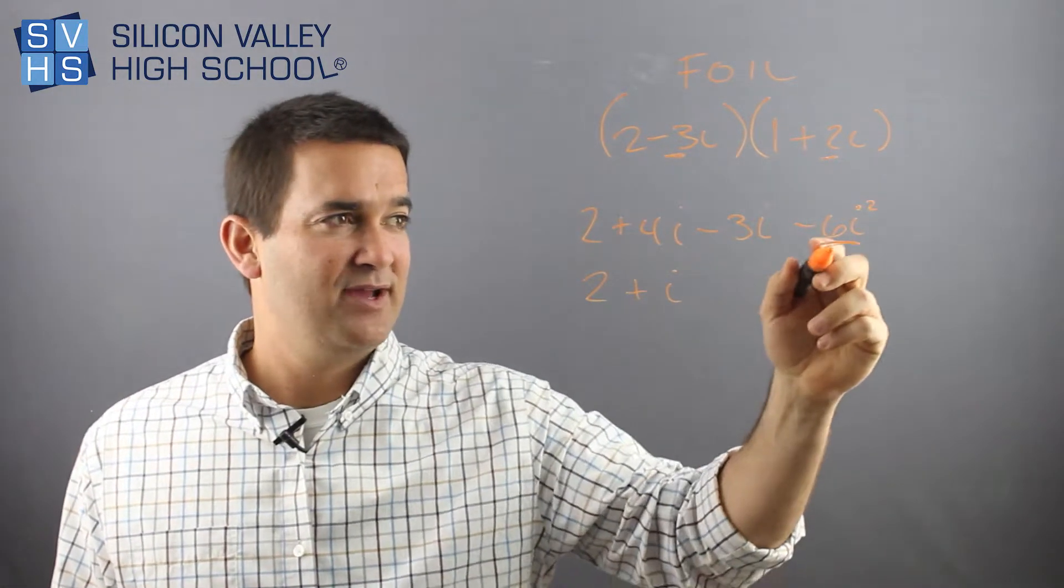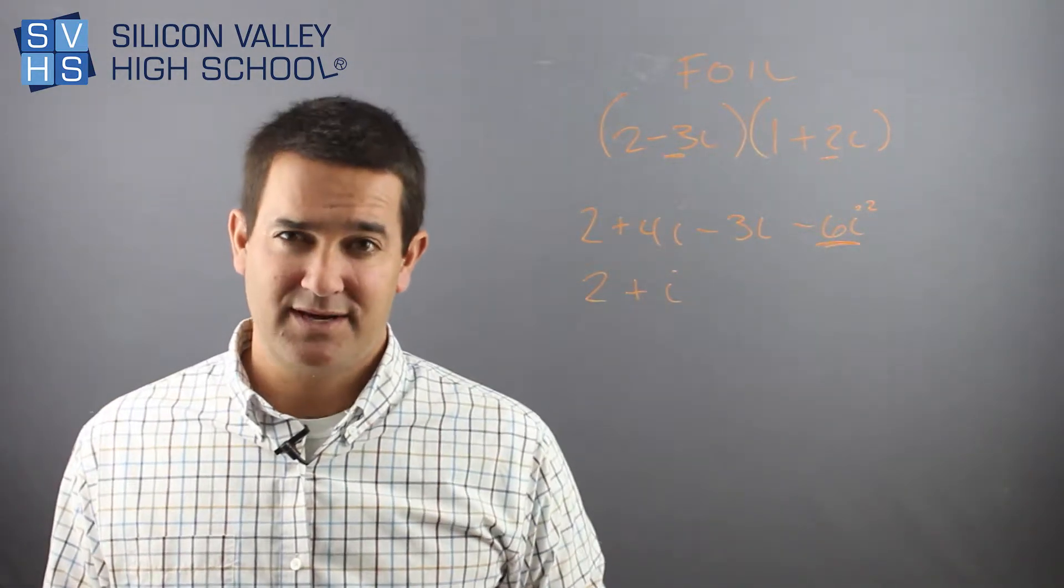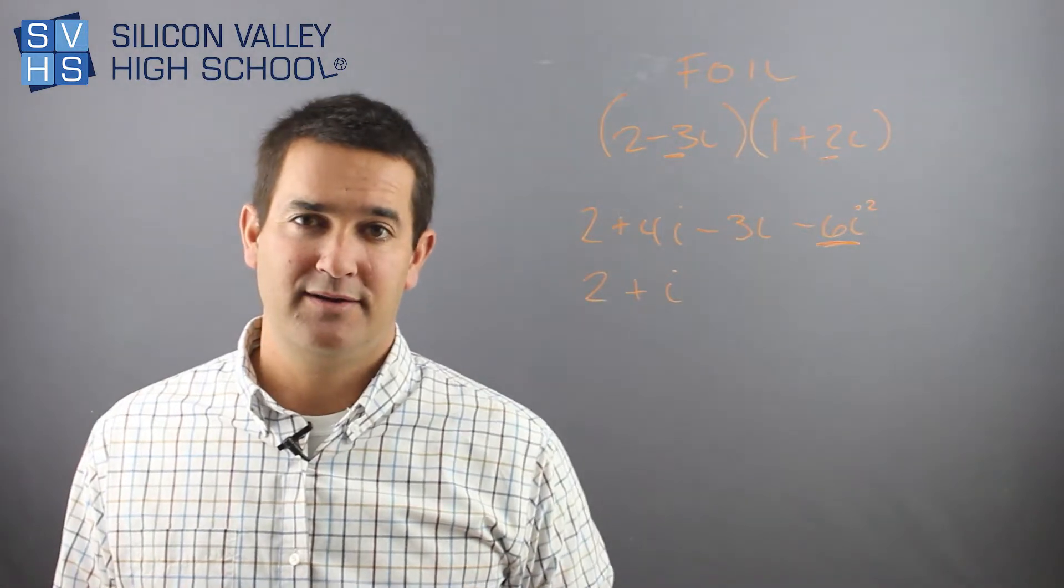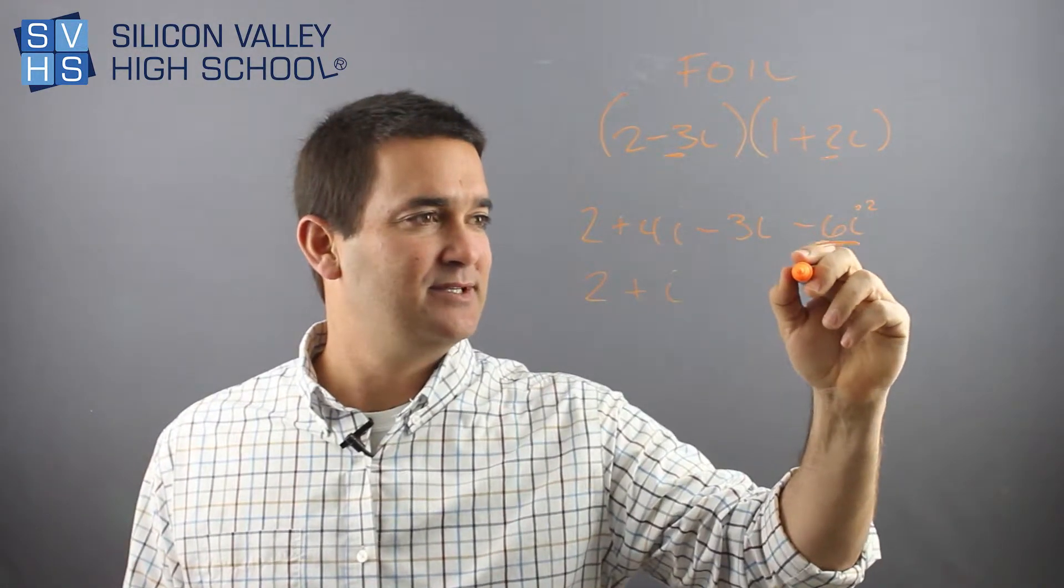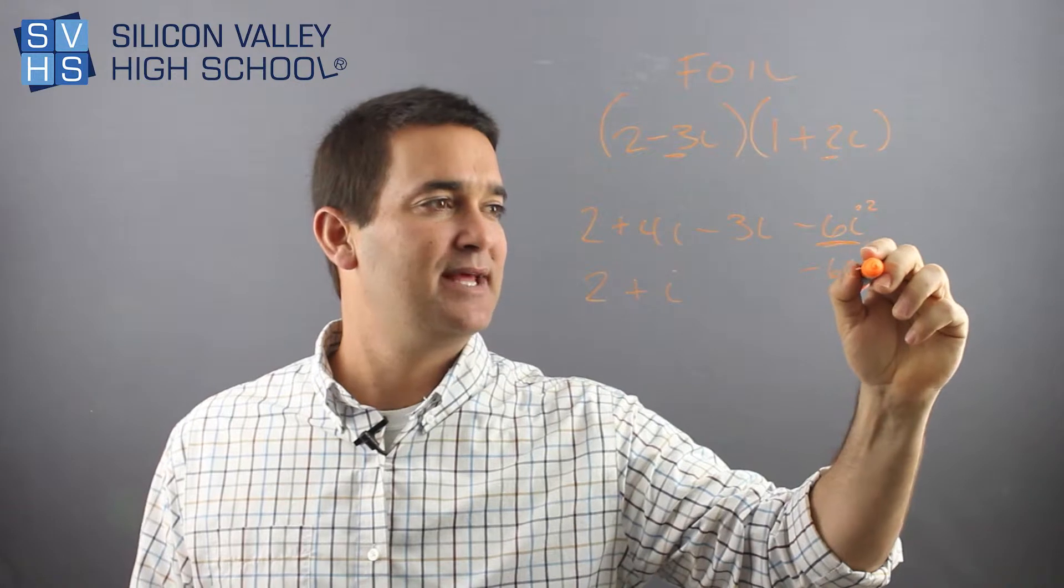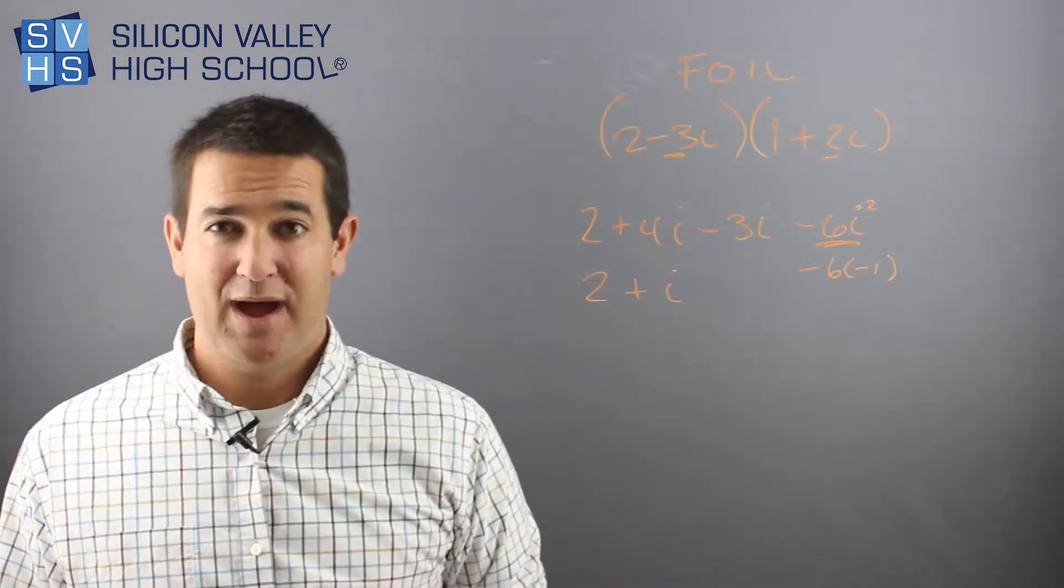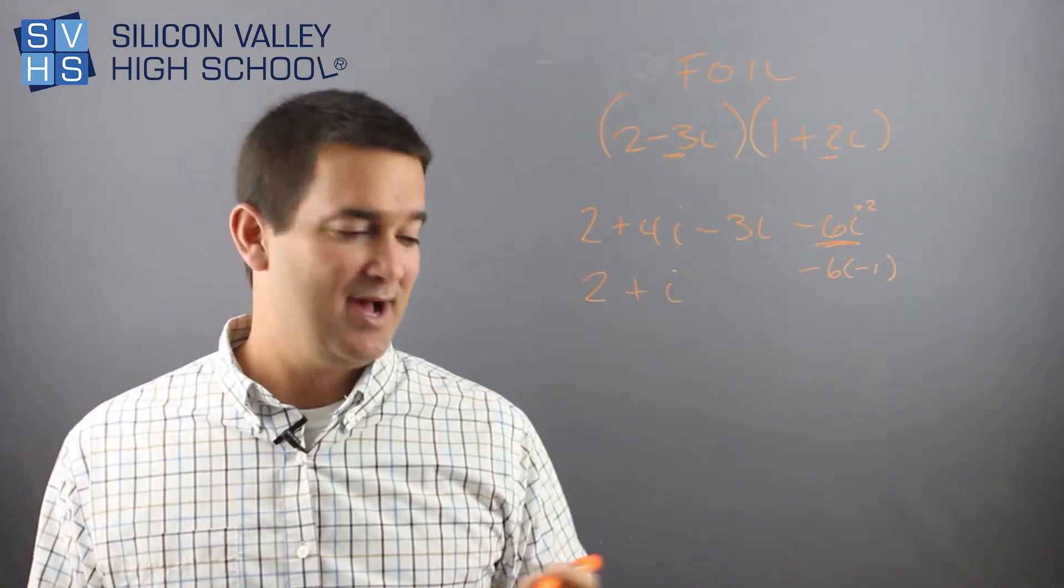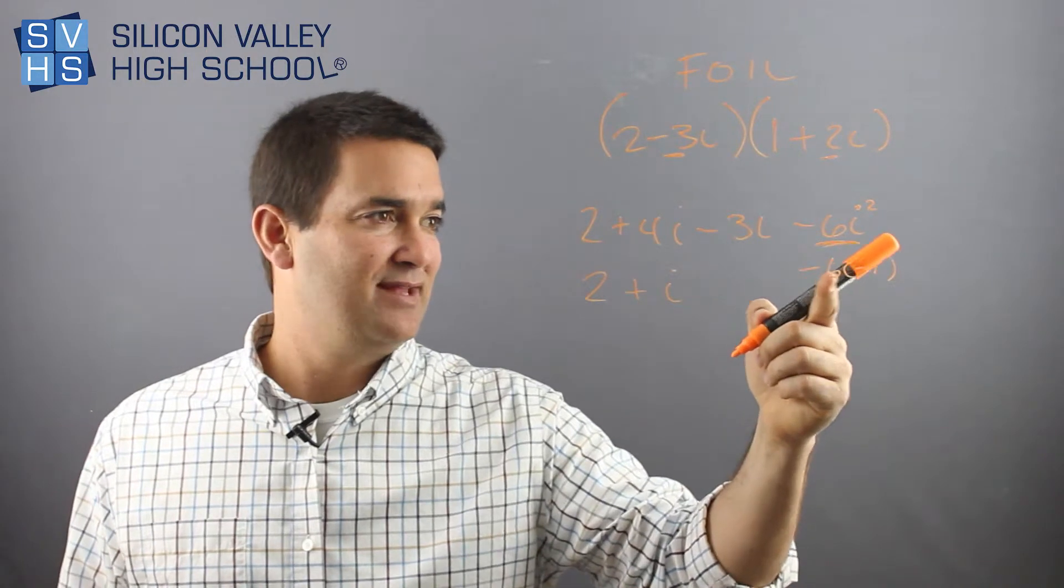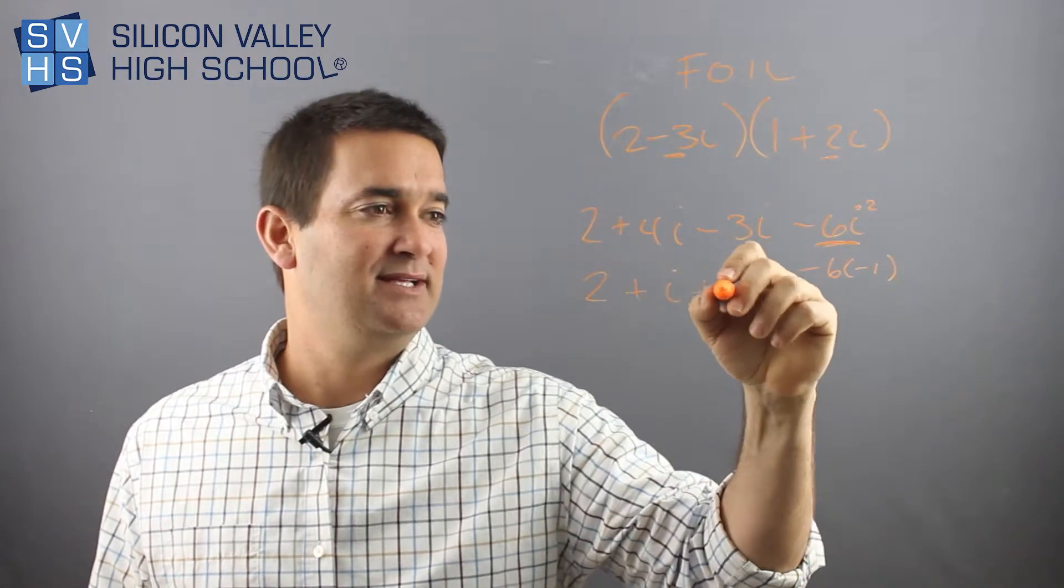Remember, if you remember from an earlier video, i squared is the equivalent of negative 1. So immediately, I could substitute this out for negative 6 times negative 1. And that's what you have to do every time with these operations with i's.